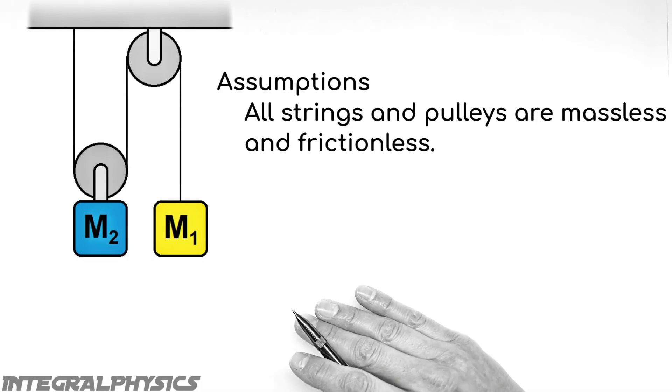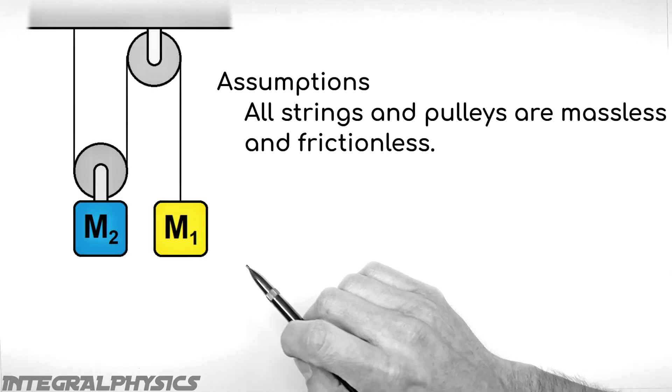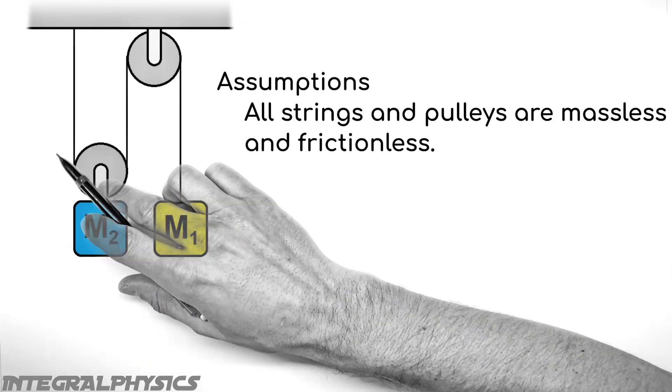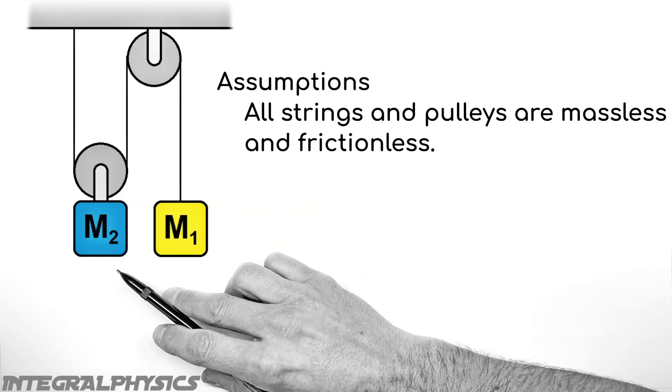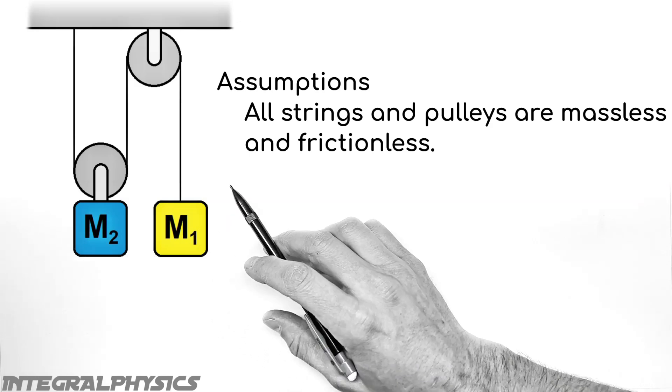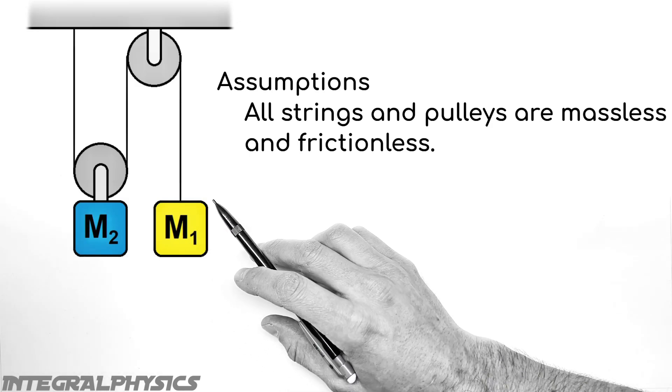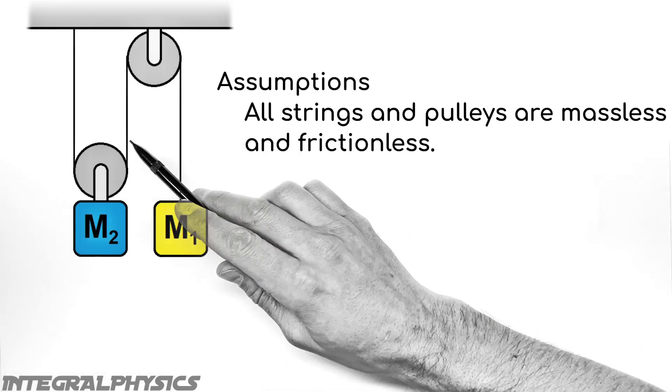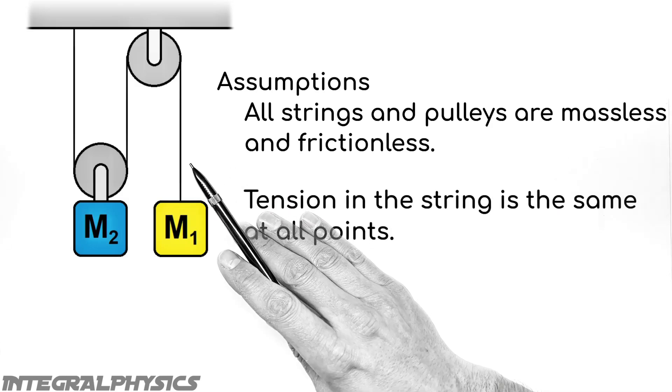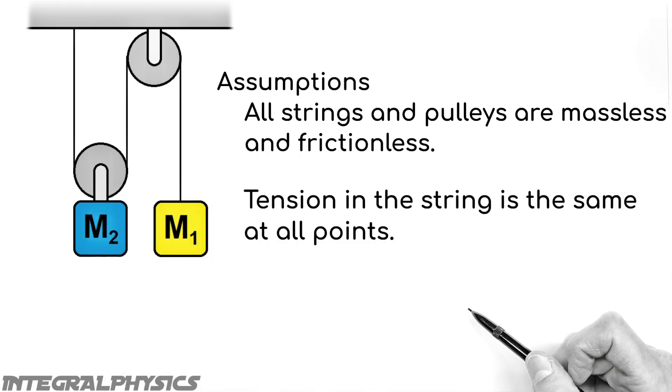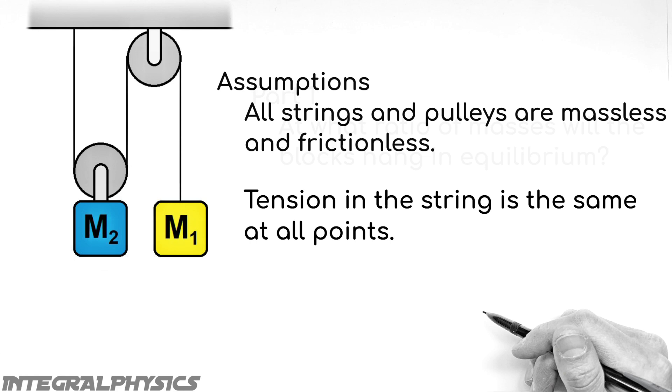Now there are a few assumptions that we're going to have to make in this problem. The first thing we're going to do is we're going to say that both the string and the pulleys are massless and frictionless. And ultimately what that means is that we're going to be able to treat the string as though the tension in the string is the same at all points. And you'll see why that's important later on.